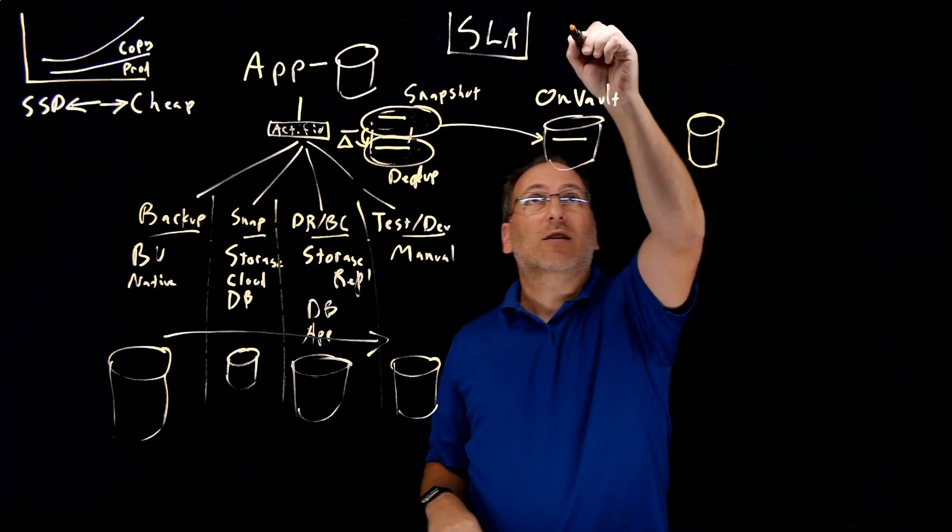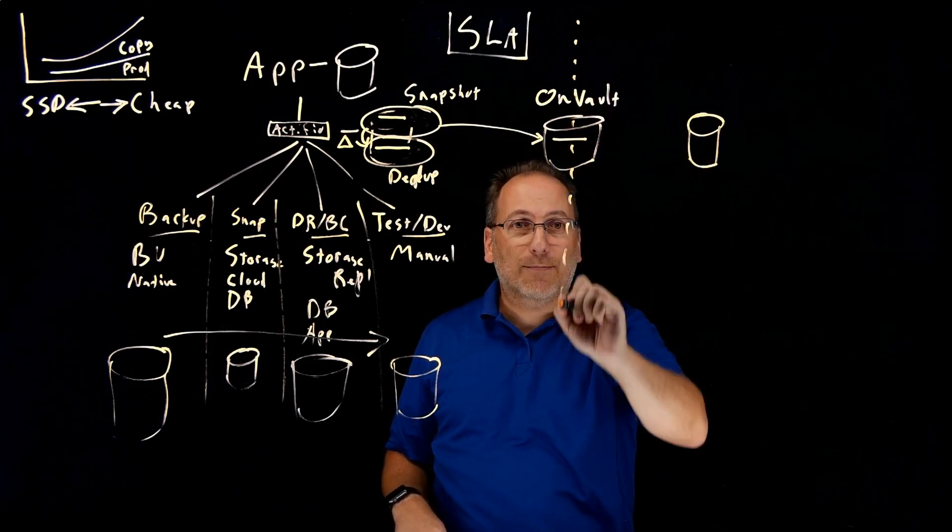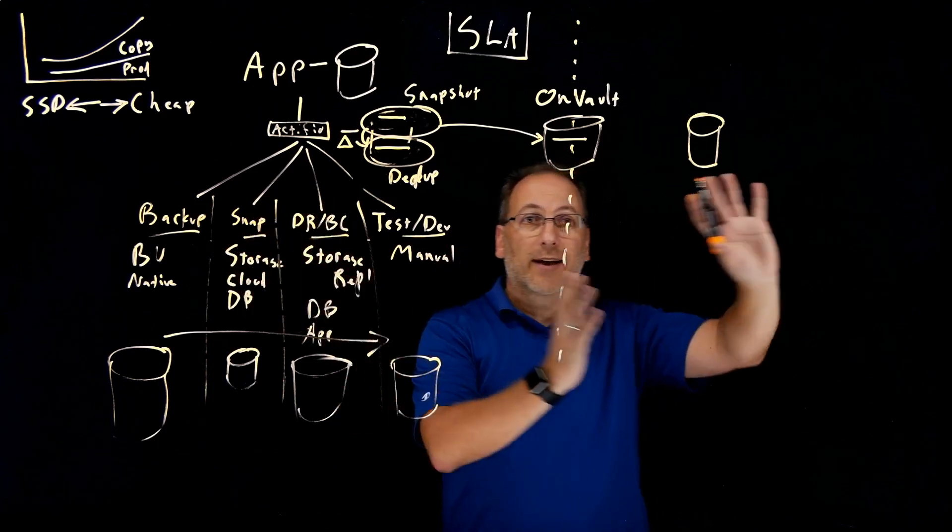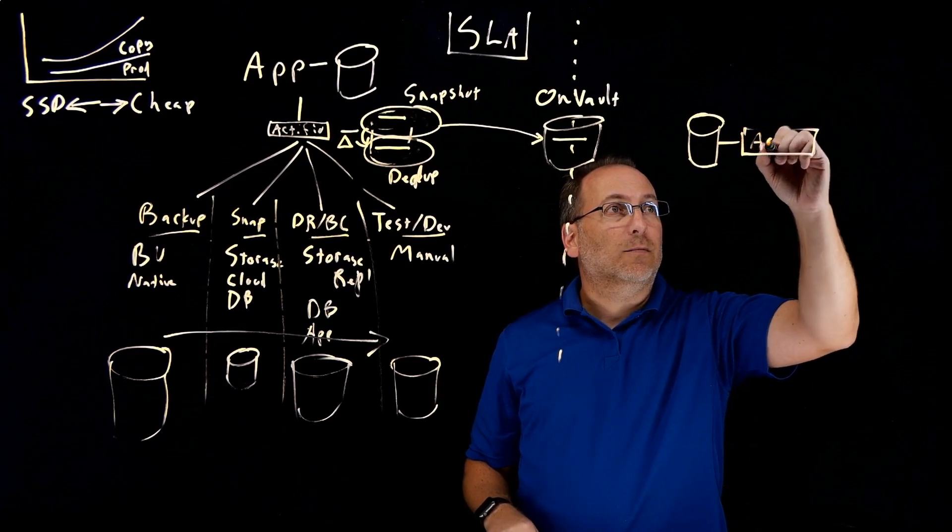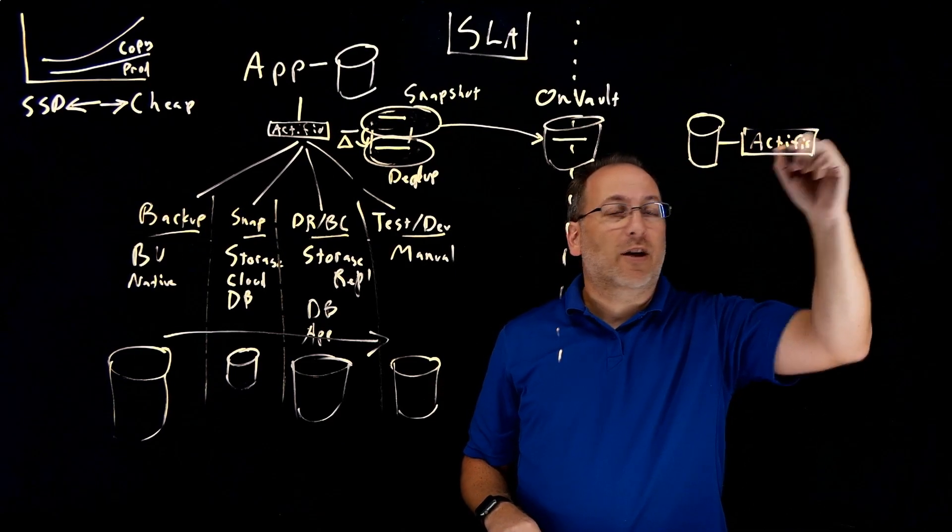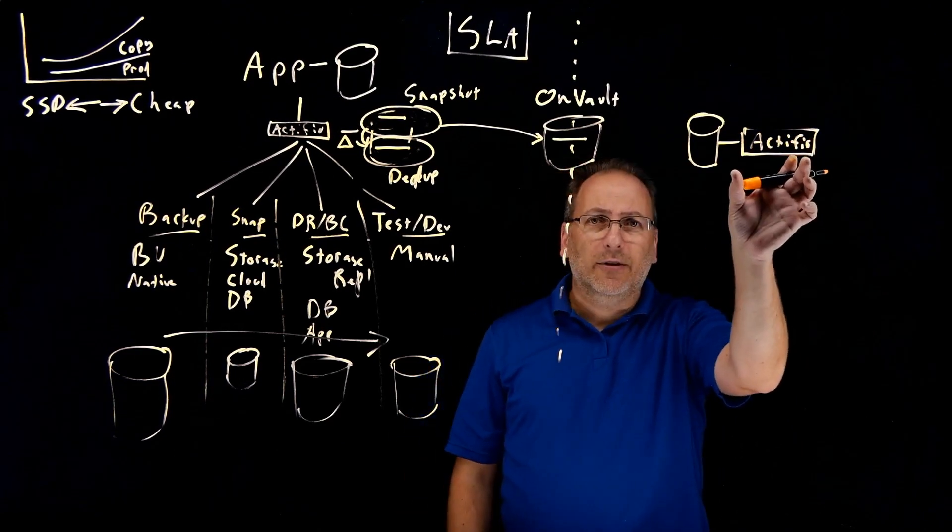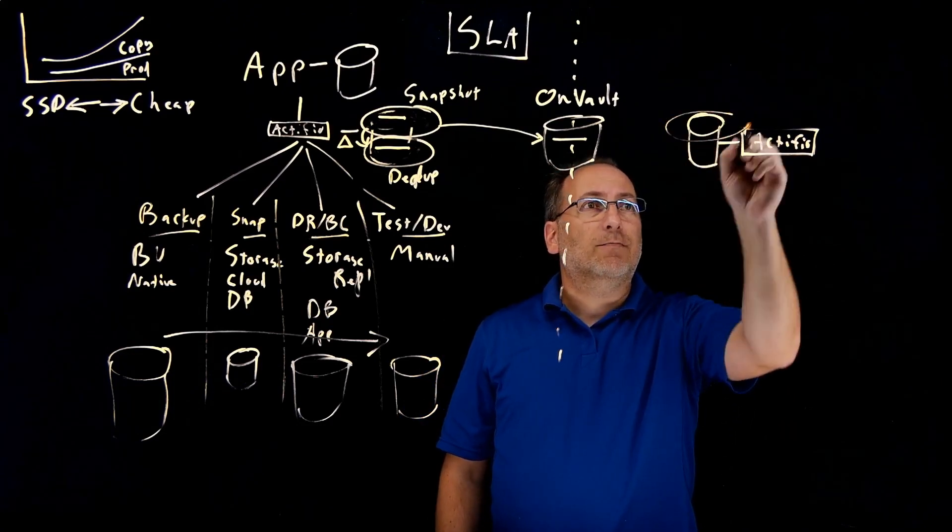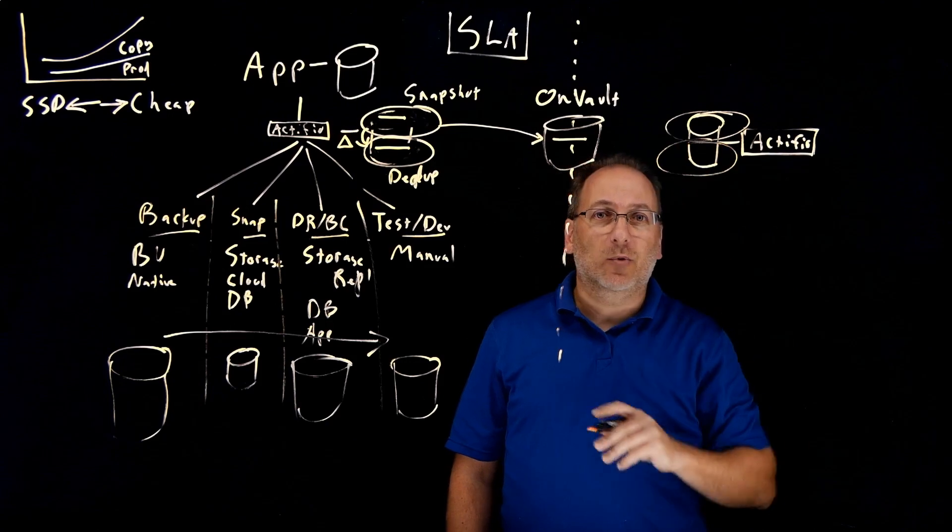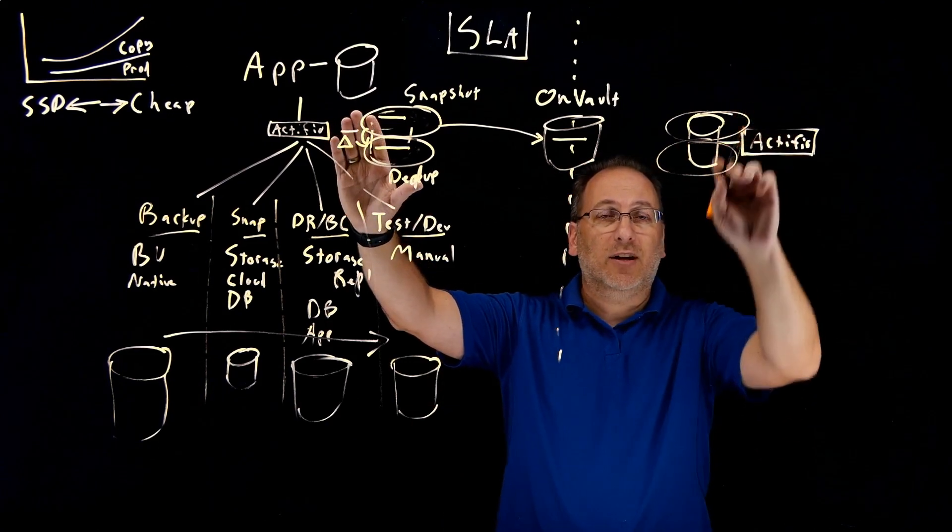And in this case, if we consider this to be a separation between local and remote, now we have an Actifio implementation in another location. Now this could be in the cloud, this could be in your own data center, it doesn't matter where. It has multiple pools associated with it, just like we do on-site, Snapshot and Dedup.